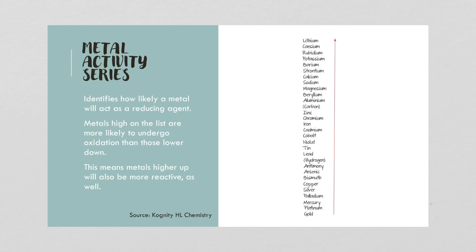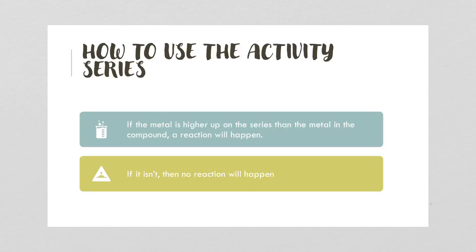We can look at this series and find out whether or not a reaction is likely to happen. In a single displacement reaction with a metal and an ionic solution, if the metal is higher on the series than the metal in the compound or solution, a reaction will happen. But if it's lower down, no reaction will happen — it will not displace the metal in solution.